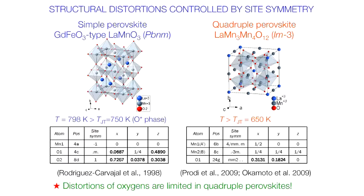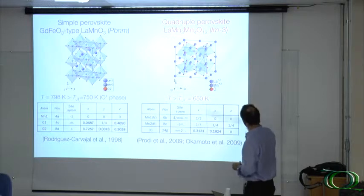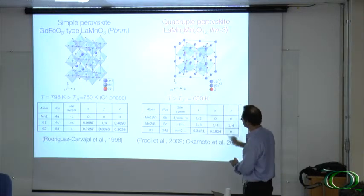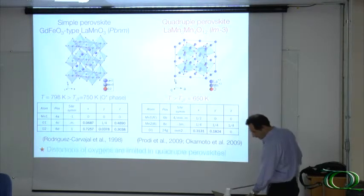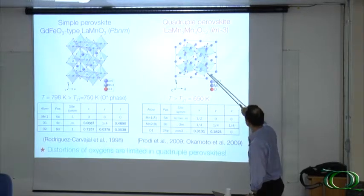To summarize, simple perovskite versus quadruple perovskite. Simple perovskite have large distortions. The oxygen sites have low symmetry, basically just the translational symmetry. In crystallography, we say they are in the general position, so you have the free parameter. This structure is more lousy. This structure is more rigid. You have basically one degree of freedom, which is the angle of the tilt. So distortion is limited, which is really important to limit the screening of the polarization.